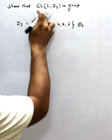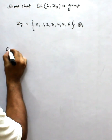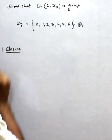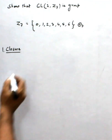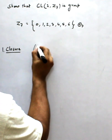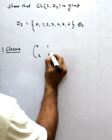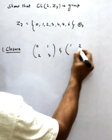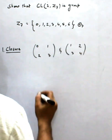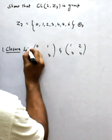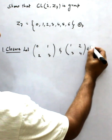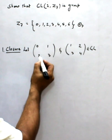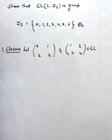First we take any two elements and we check the closure property. For closure, I take two matrices: one is [0, 1; 2, 3] and the second is [1, 2; 3, 4]. These elements are from GL₂(Z₇) because these numbers fall in Z₇, so the domain is satisfied.